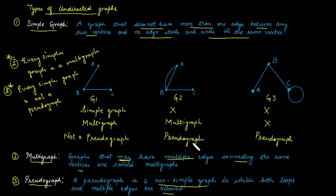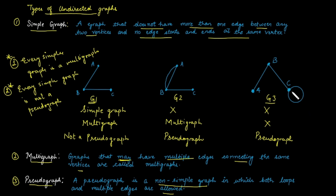What about the relationship between multigraph and pseudograph? Whether every multigraph is a pseudograph — the answer is no. The example is G1: if the graph is simple, then it is a multigraph but cannot be a pseudograph. Conversely, is every pseudograph a multigraph? The answer is no, and the example is G3, because if a self-loop is present, it is a pseudograph but cannot be a multigraph.